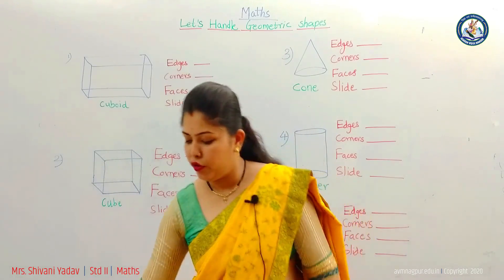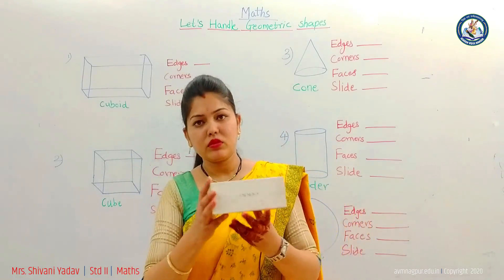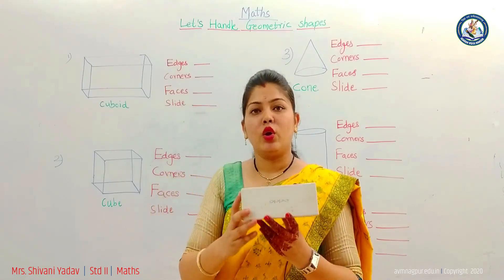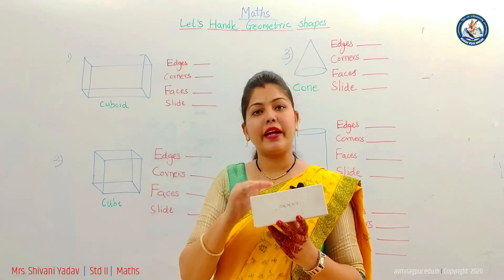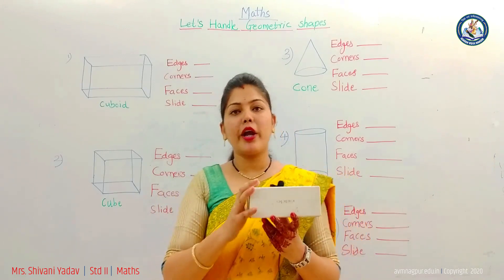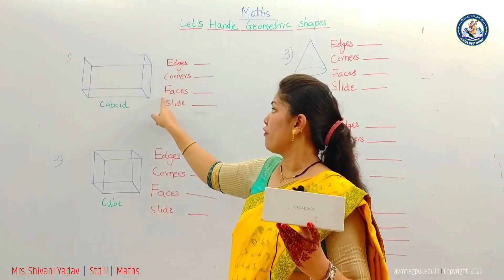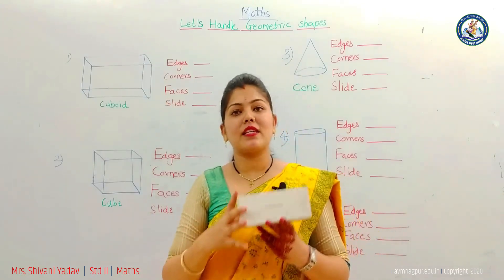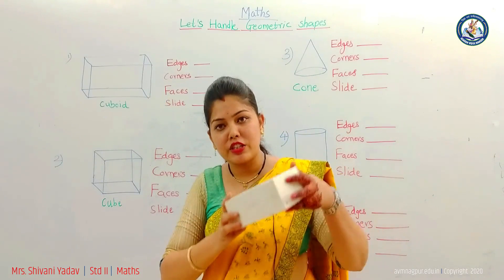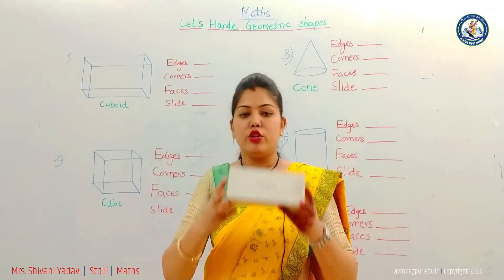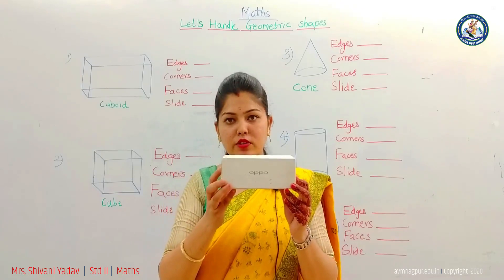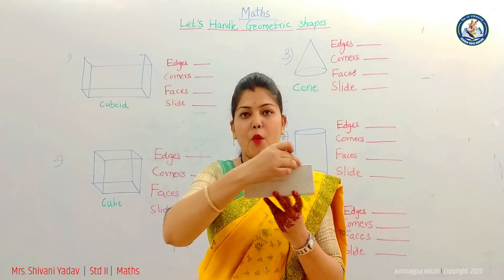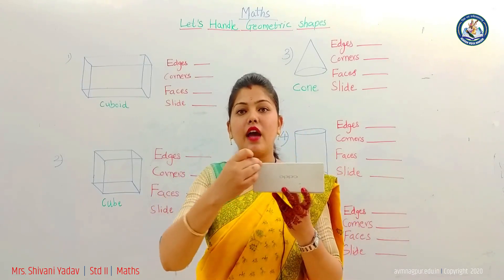From this box — this is a cuboid shape box. We see what a cuboid contains. A cuboid contains edges, corners, faces, and it also slides. Meaning, does it slide, flip, slip, or roll? So this is a cuboid box. What does a cuboid contain? Edges. I am pointing towards this line — this line is an edge.